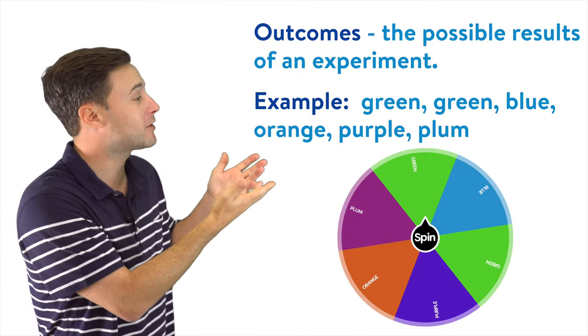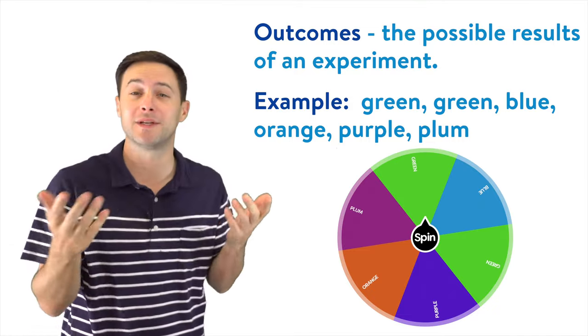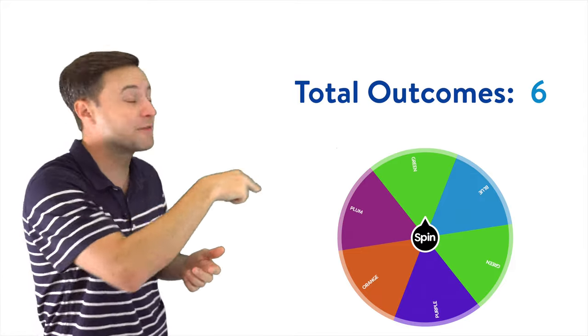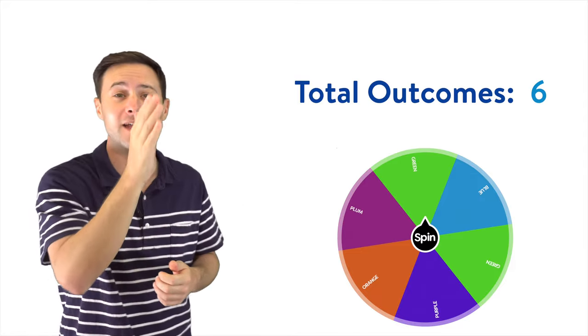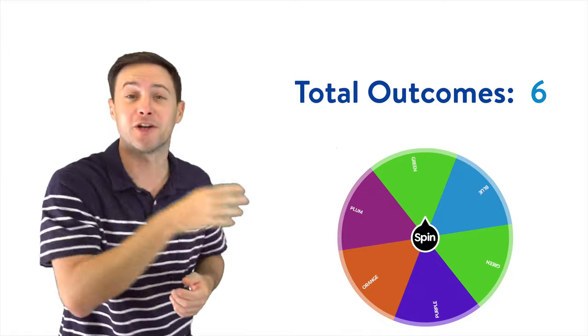So the total number of outcomes in this situation would be six, because there are six different places where that spinner could land on.